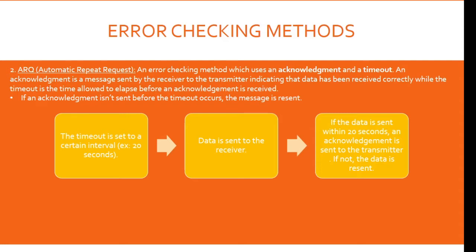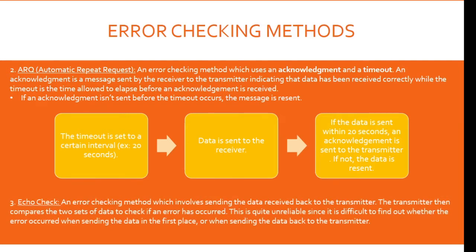First, the timeout is set to a certain interval, for example 20 seconds. Then, data is sent to the receiver. If the data is received within 20 seconds, an acknowledgement is sent to the transmitter. If not, the data is resent. Number three, echo check — it is an error checking method which involves sending the data received back to the transmitter. The transmitter then compares the two sets of data to check if an error has occurred. This is quite unreliable since it is difficult to find out whether the error occurred when sending the data in the first place or when sending the data back to the transmitter.